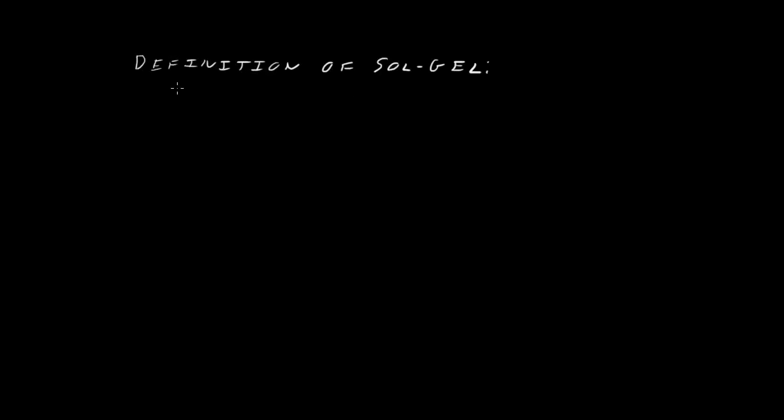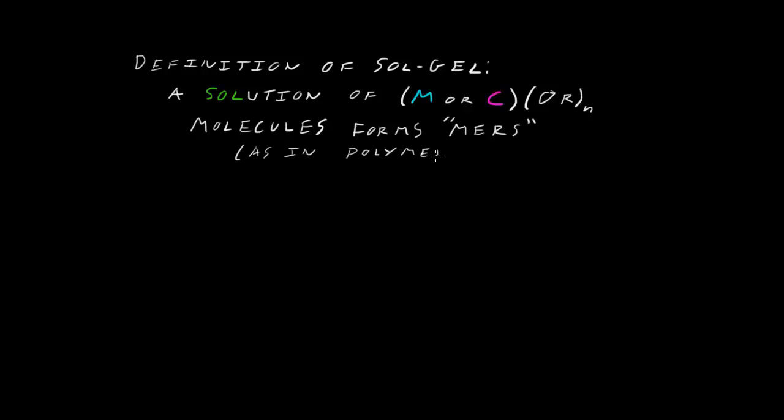Alright, let's get a basic definition of sol-gel, working definition at least. Sol-gel is a solution, that's where we get sol, of either a metal or a carbon, or a carbon based precursor, mer unit. So metal or carbon with some organic oxide groups. These molecules form mers, as in polymers. So dimers, trimers, if you keep going, polymers. These polymers then link up and cross-link in order to form a stable gel. So we have sol and gel.